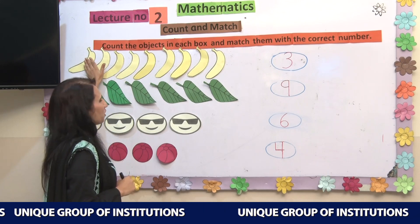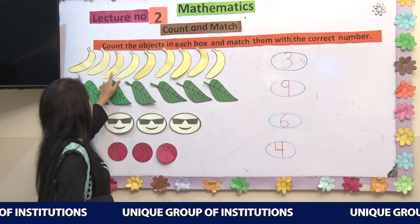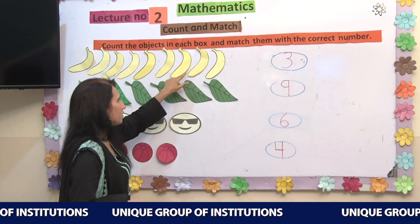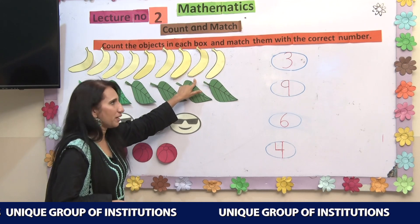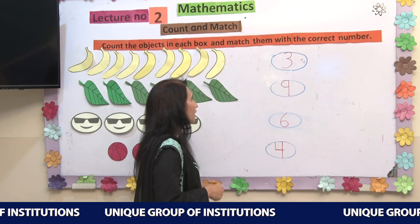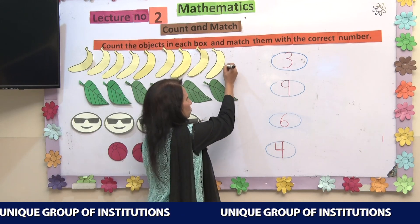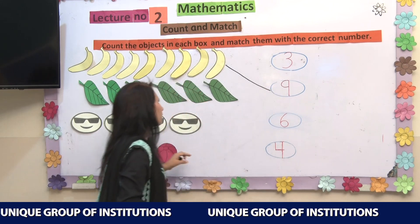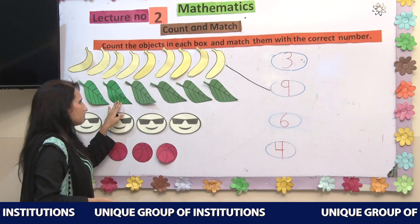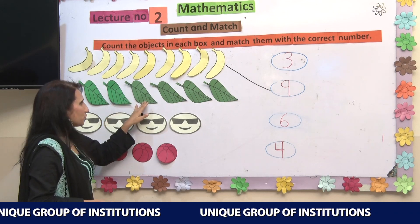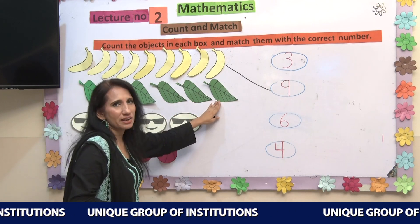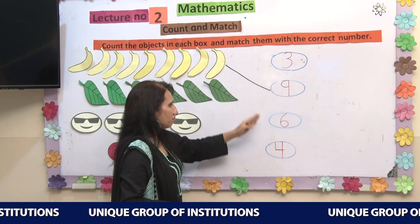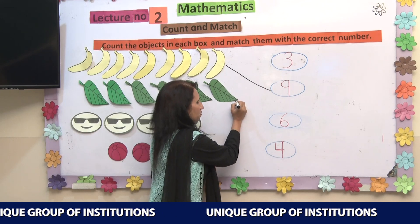Let's count and match again. How many bananas are here? 1, 2, 3, 4, 5, 6, 7, 8, 9. There are 9 bananas. Number 9 is written over here, so let's match the bananas with their number. Now let's count these leaves: 1, 2, 3, 4, 5, 6. There are 6 leaves. Number 6 is written here, so let's match.